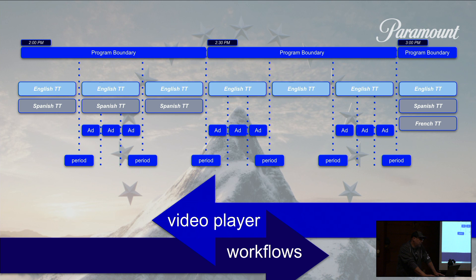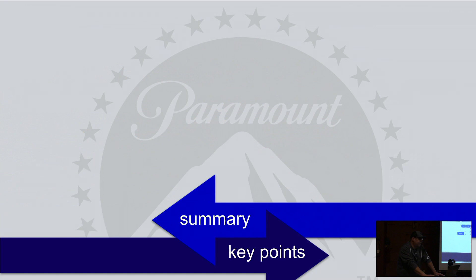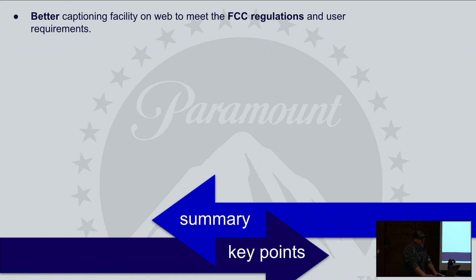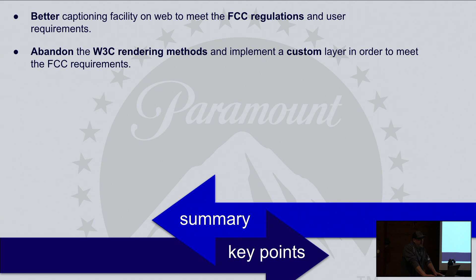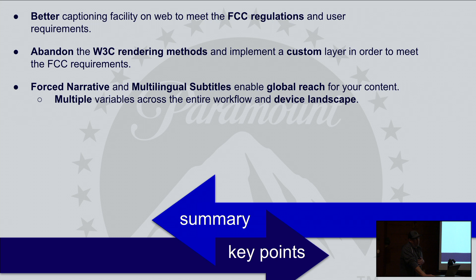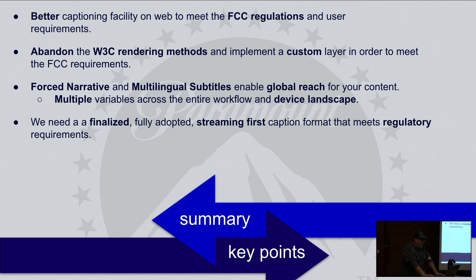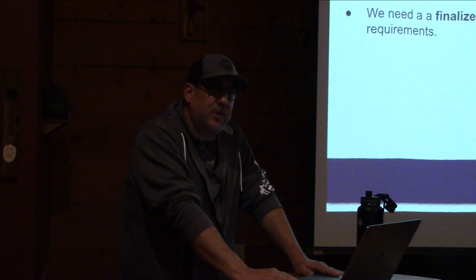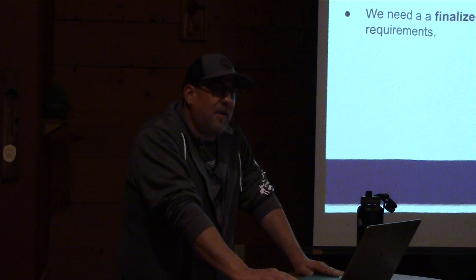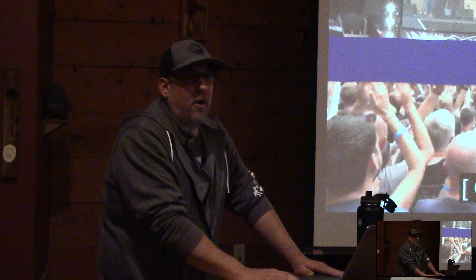Key takeaways: we need better facilities for captioning to meet FCC requirements. For a decade the solution has been to abandon most W3C facilities and implement custom rendering. Forced narratives and multilingual subtitles are essential for global reach but are hard to implement due to multiple variables across the entire workflow and device landscape. We need a finalized, fully adopted, streaming-first caption format that meets regulatory requirements — perhaps IMSC 1.1. Most importantly, smart device manufacturers must find a way to stay current with streaming technology embedded on their devices.